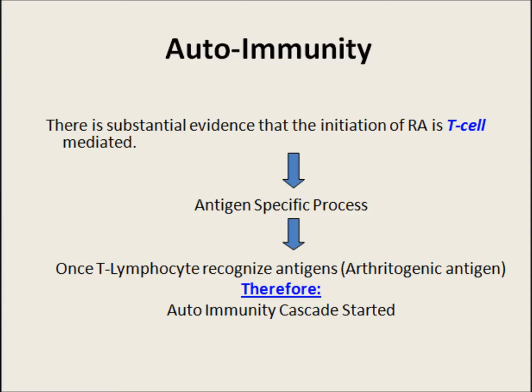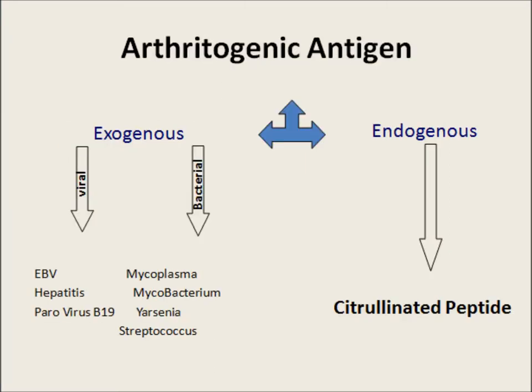Autoimmunity is initiated by activation of T-cells, which then cause release of cytokines, leading to destruction of cartilage and bone. The antigens may be exogenous or endogenous. Exogenous antigens which initiate the immune response may be viruses and bacteria, while endogenous antigens are citrullinated peptides.